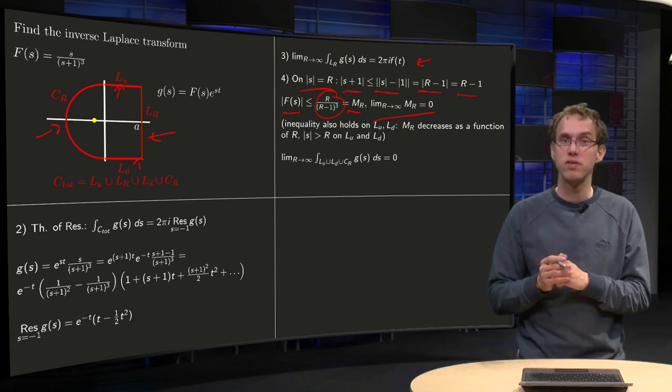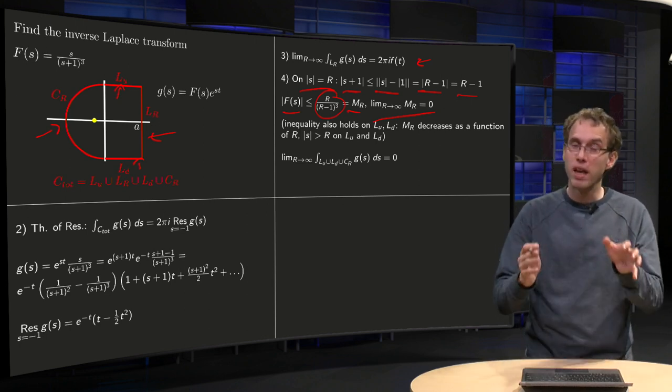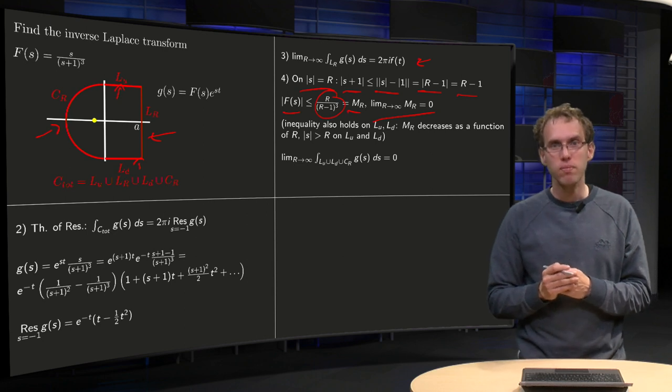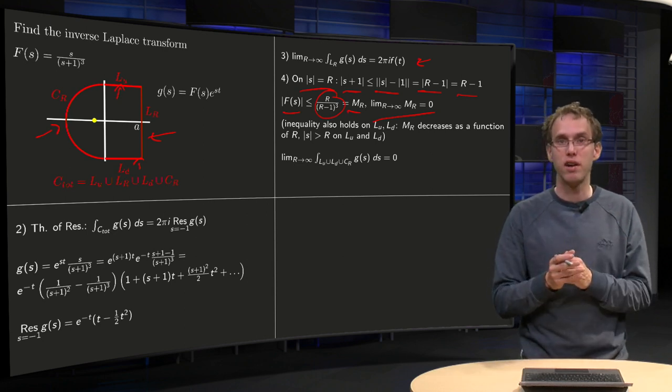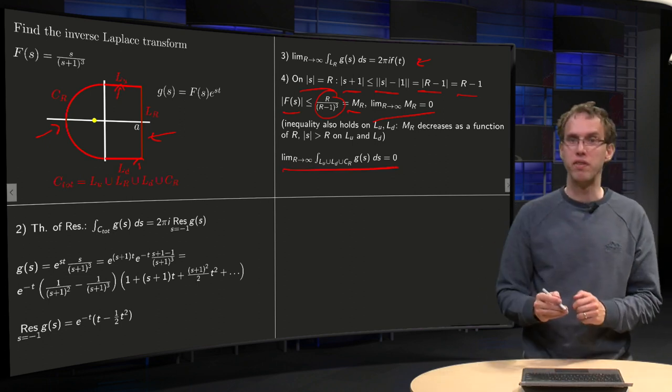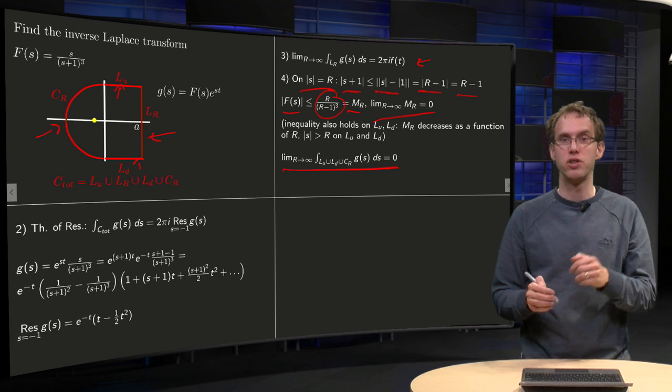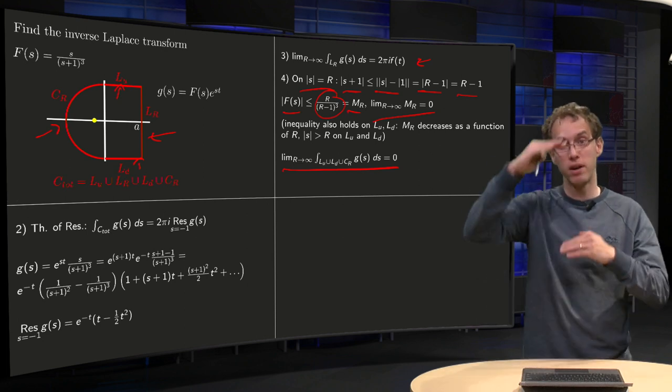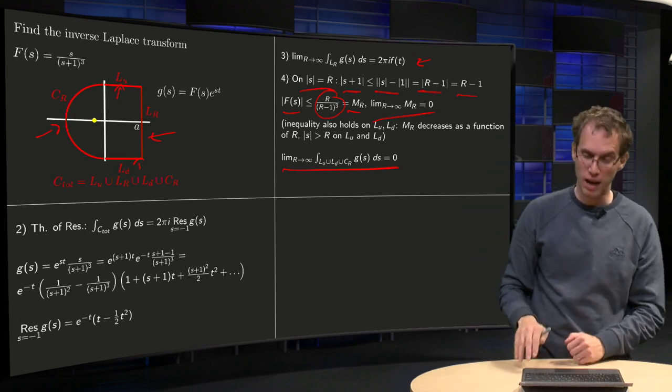And then you can use the results we obtained previously. If your capital F of S is bounded by some MR, and limit going to zero, then all those integrals vanish. On this circle you use Jordan's lemma, on those contributions you use an MR estimate.